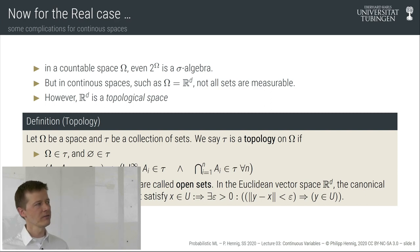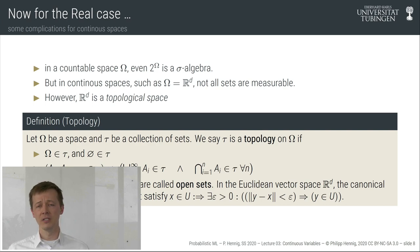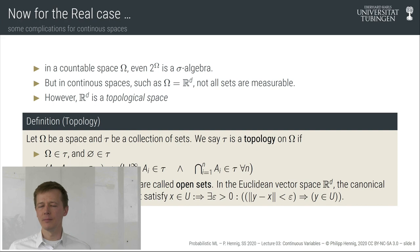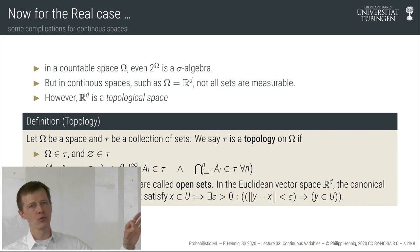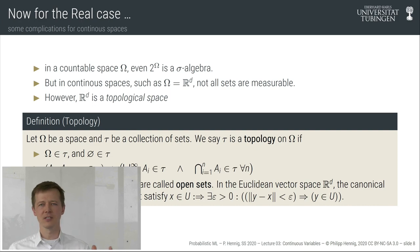However, in continuous spaces — which we want to talk about — not all sets, and in particular not the power set in general, are measurable. We want to talk about real-valued variables: rates, velocities, positions in time and space. These come from an uncountable space, and there is a weird problem that in such spaces not all sets are measurable. I won't construct a non-measurable set here, but you can look them up on Wikipedia — they are oddly constructed sets.